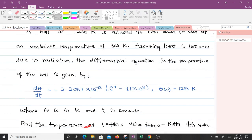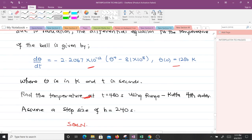And we have an initial condition given, where theta is in Kelvin and T is in seconds. Find the temperature at T equals 480 seconds using Runge-Kutta fourth order, and we have to assume a step size of H equals 240 seconds.